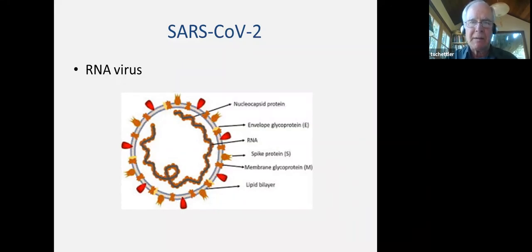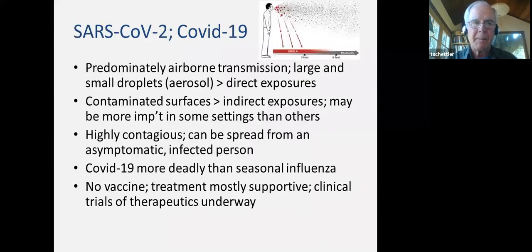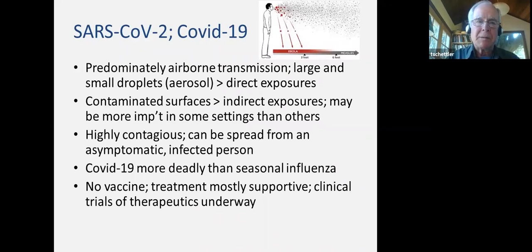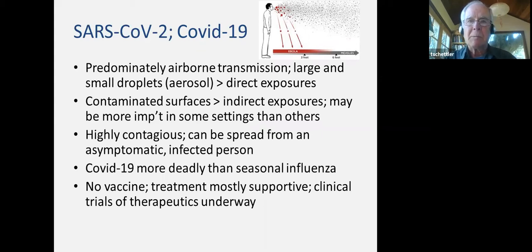Those entry points are typically in the nose, throat, and lungs. This virus is spread predominantly through the air in both large and small droplets through coughs and sneezes, and we're learning that even talking can expel small droplets that can travel some distance through the air. Those are called aerosols when they're very tiny, and they can go much farther than the few feet that we originally thought this virus could travel.